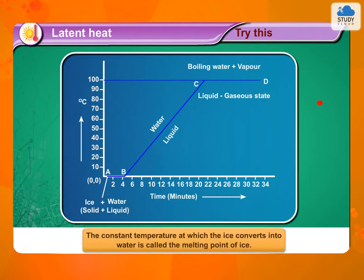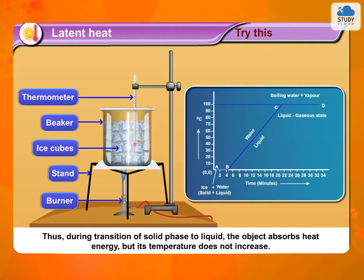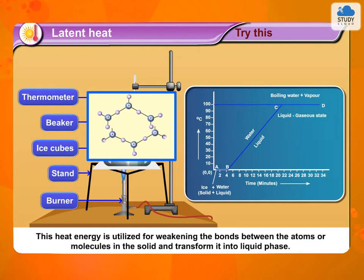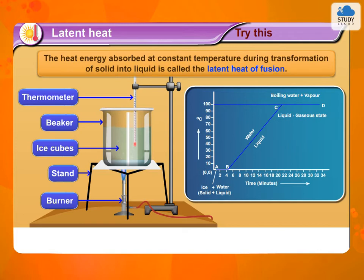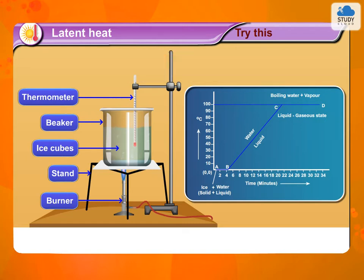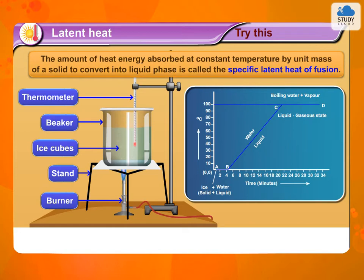The constant temperature at which the ice converts into water is called the melting point of ice. During transition of solid phase to liquid, the object absorbs heat energy but its temperature does not increase. This heat energy is utilized for weakening the bonds between the atoms or molecules in the solid and transform it into liquid phase. The heat energy absorbed at constant temperature during transformation of solid into liquid is called the latent heat of fusion. The amount of heat energy absorbed at constant temperature by unit mass of a solid to convert into liquid phase is called the specific latent heat of fusion.